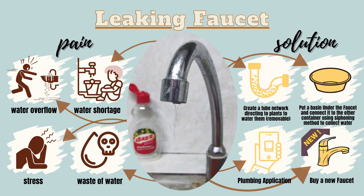First is to create a tube network directly to plants to water them. It is removable, so the network depends on the number of your plants that you decide to water. Next is to put a basin under the faucet and connect it to another container using the siphoning method to collect water.